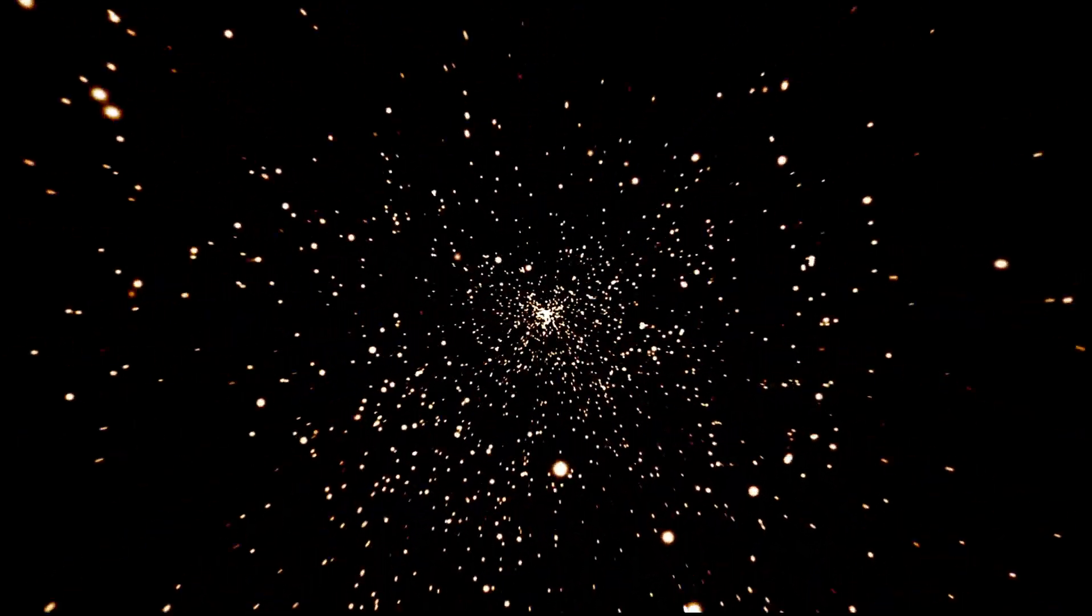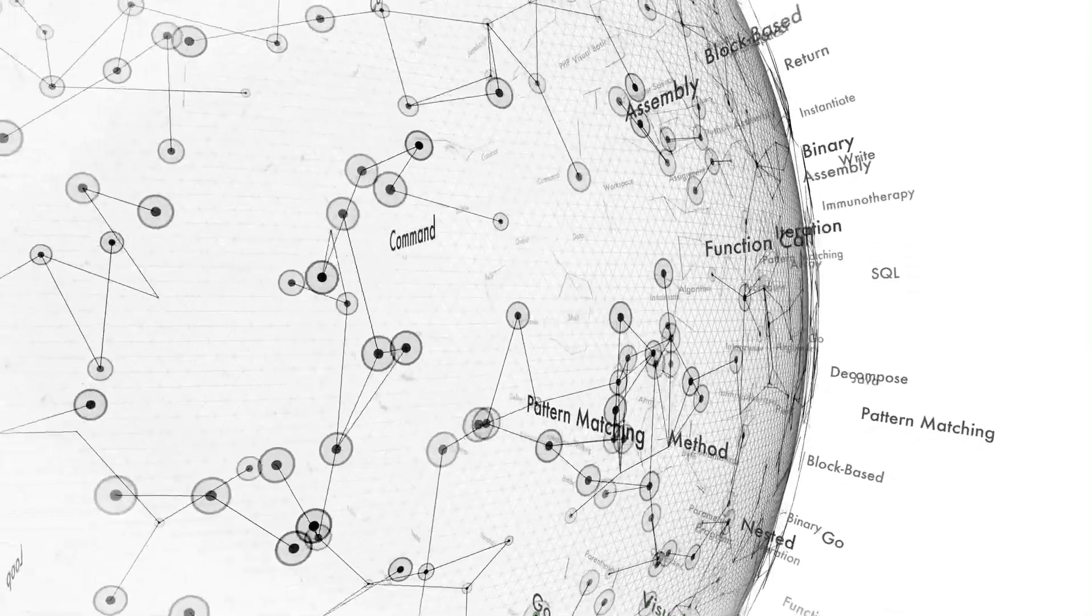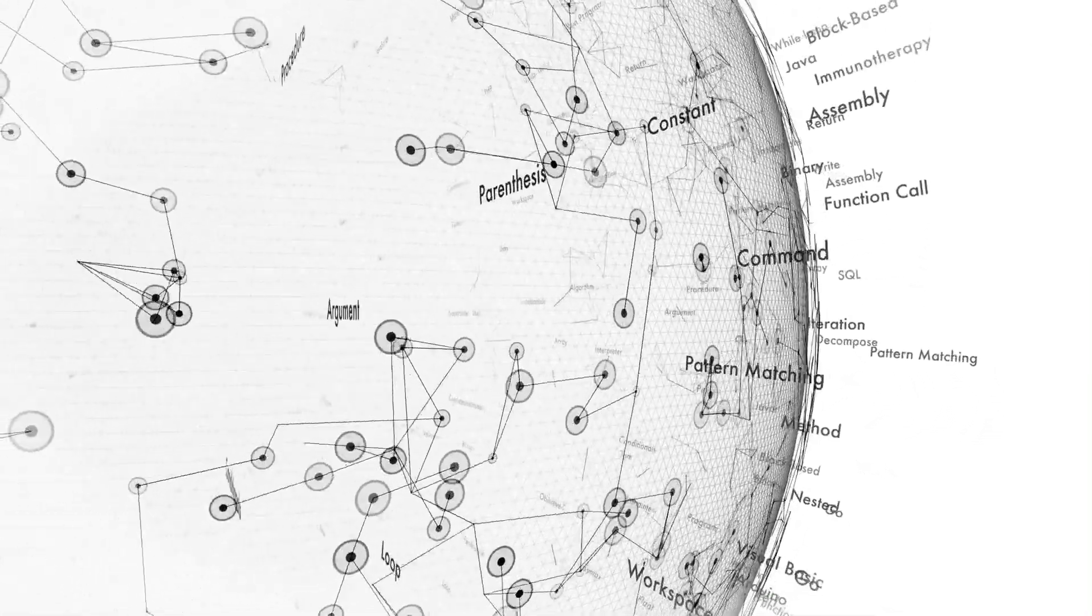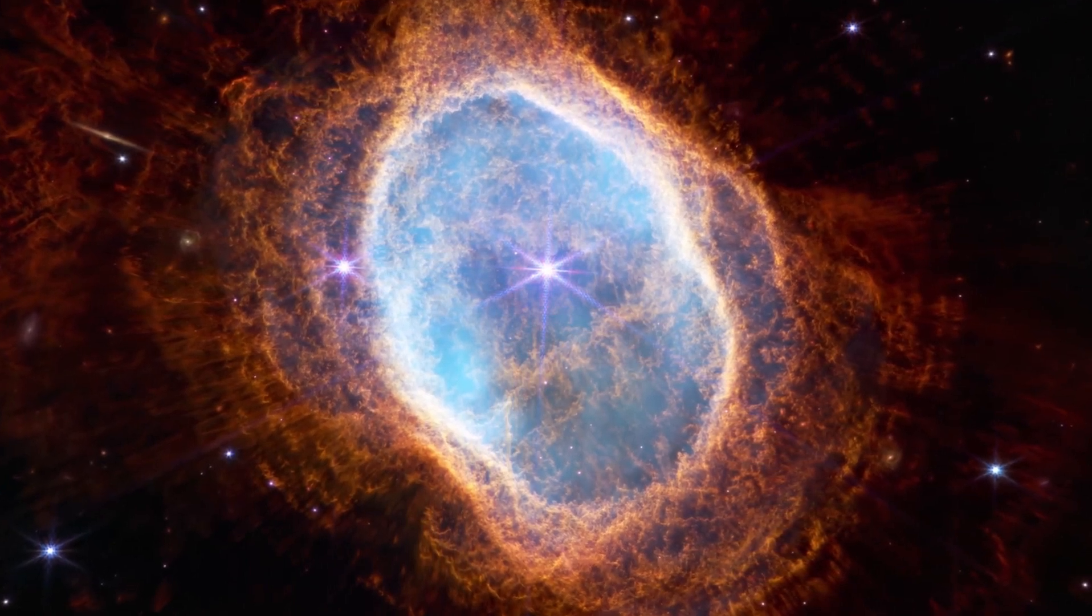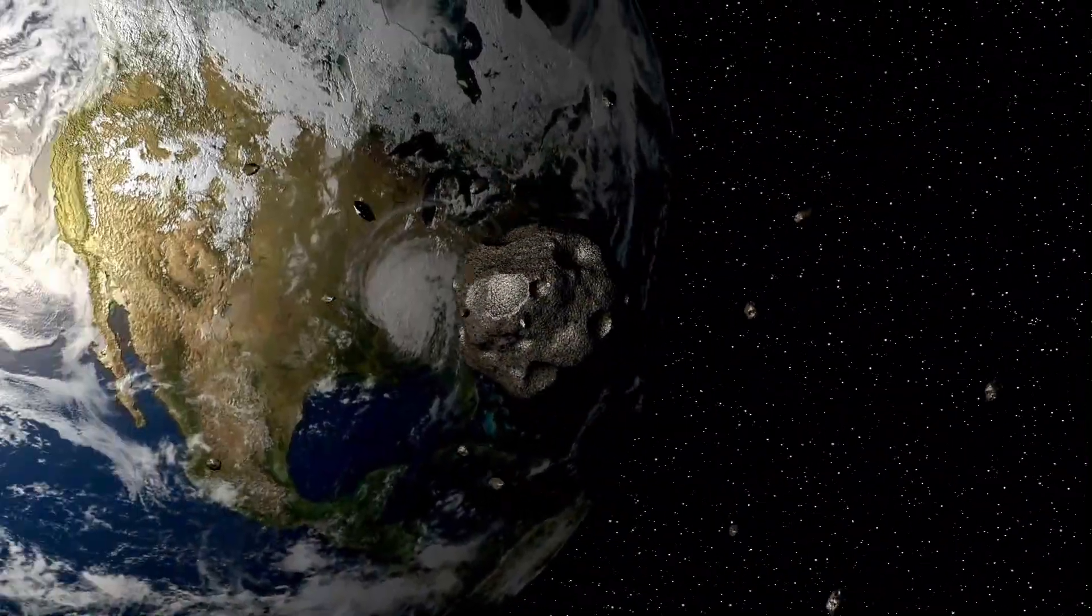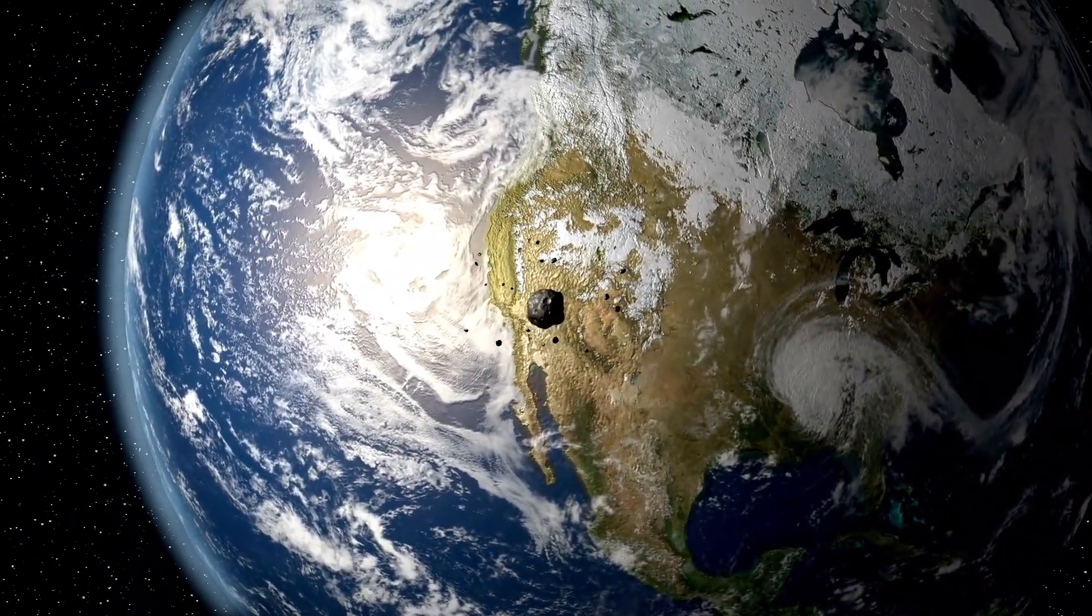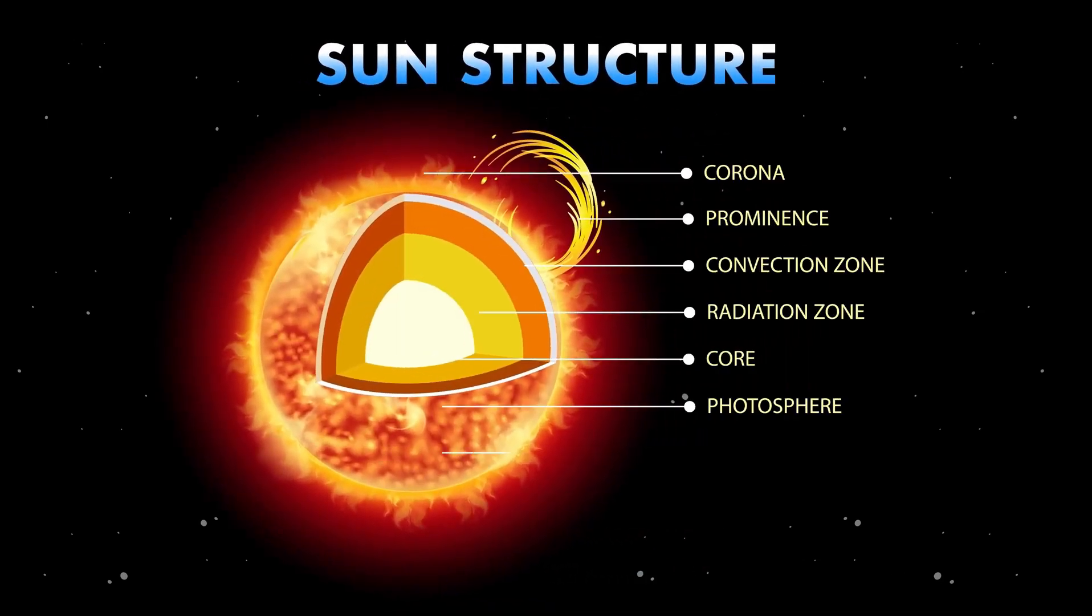Betelgeuse, approximately 764 times larger than our sun, is a stellar behemoth. Were it to replace our sun, its surface would extend beyond the orbit of Mars, engulfing Mercury, Venus, Earth, and Mars in its stellar embrace. This incredible size speaks to its stage in the stellar life cycle. As a supergiant, Betelgeuse is in the twilight of its existence, a phase characterized by expansion and cooling following a life spent fusing hydrogen into helium in its core.